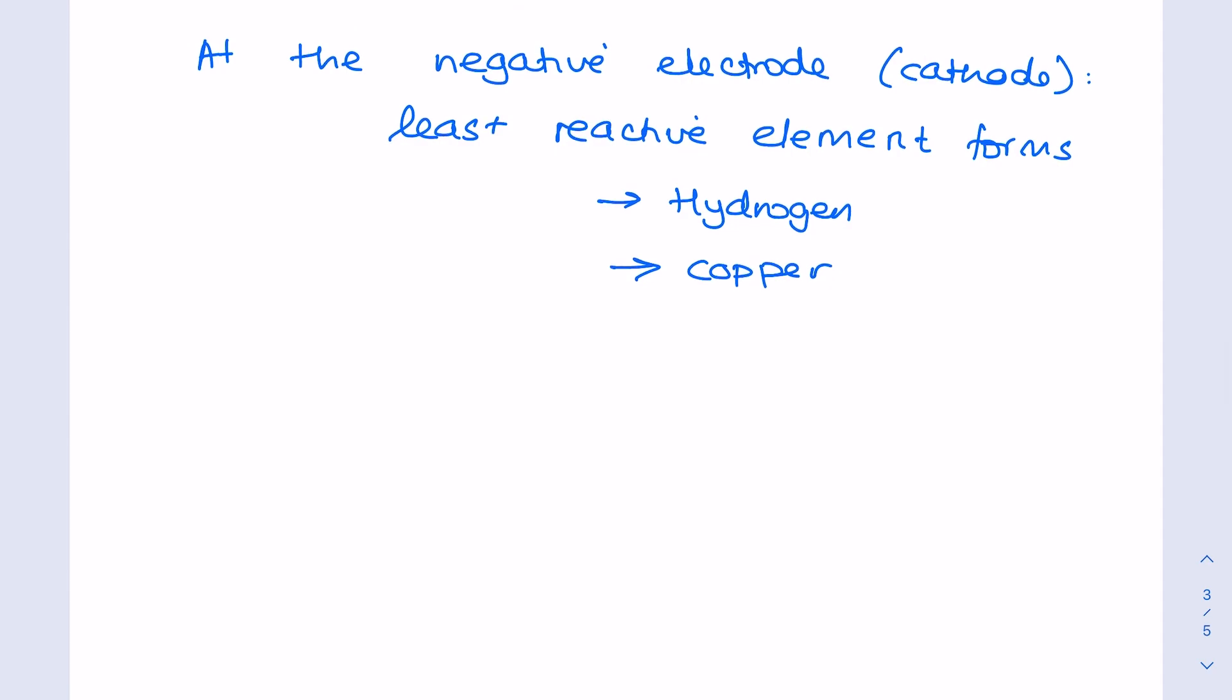At the positive electrode, the anode, it will be the halogen that forms preferentially followed by oxygen.